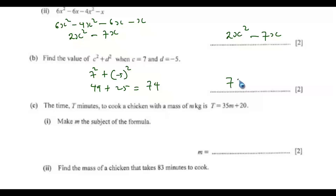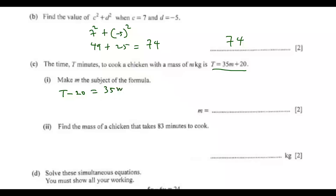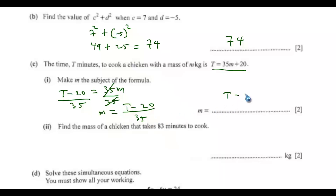The time T in minutes to cook a chicken with a mass of m kilograms is given by a formula. Make m the subject. Bring 20 to the left-hand side: T minus 20 equals 35m. Divide both sides by 35, so m equals (T minus 20) over 35.